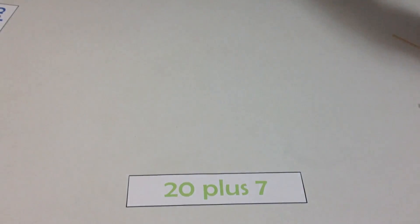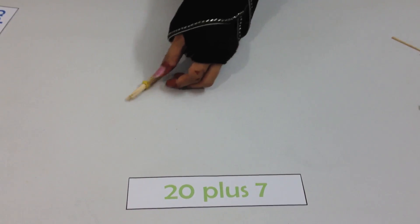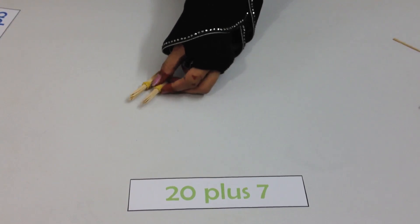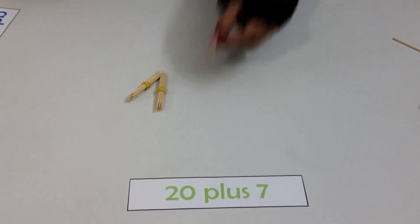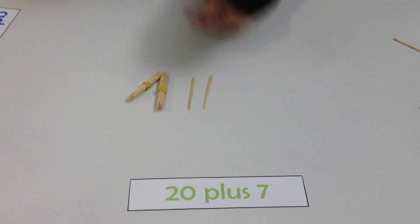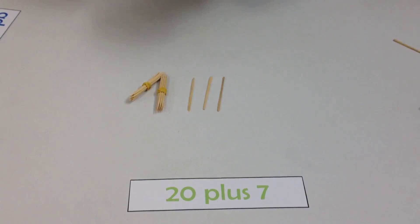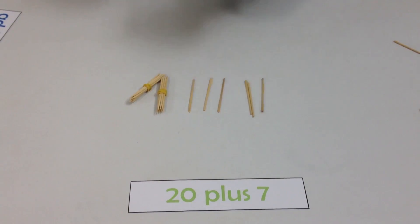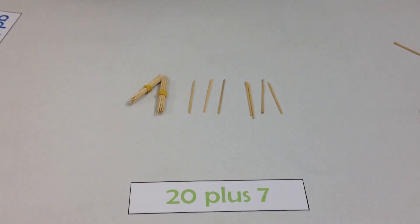20 plus 7. We are going to take 20 first. This is 10 plus 10 makes 20. And then we have 21, 22, 23, 24, 25, 26, and 27. That's our answer.